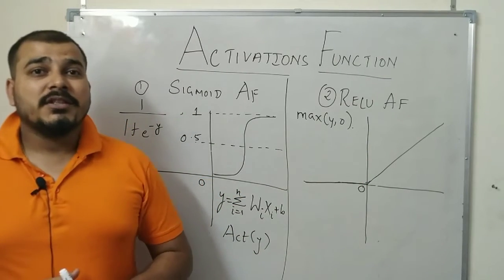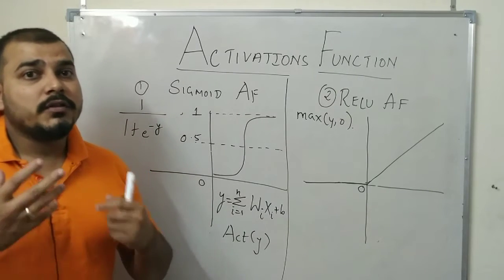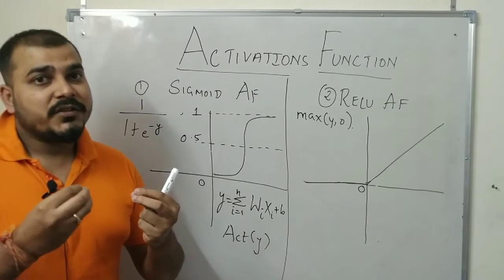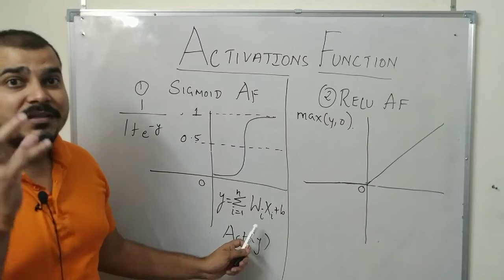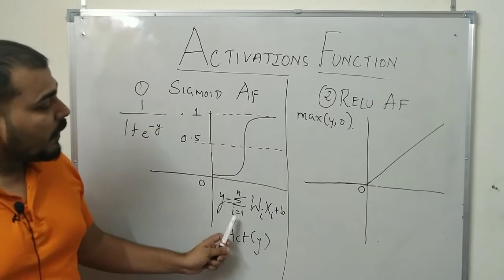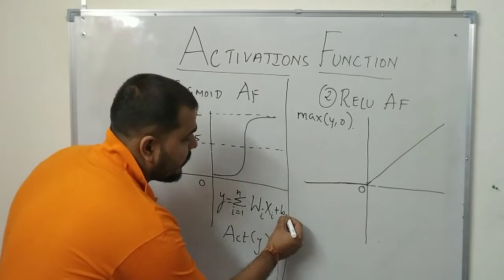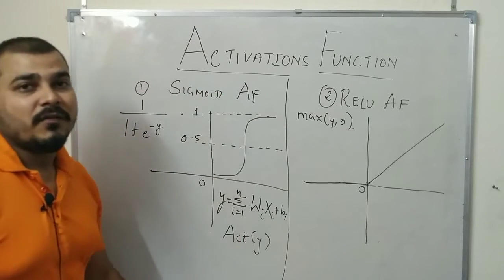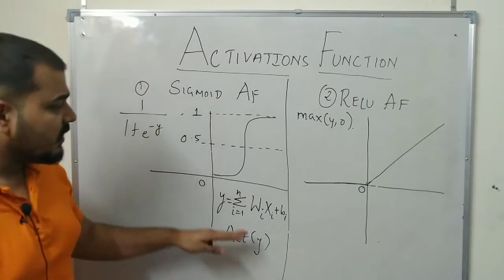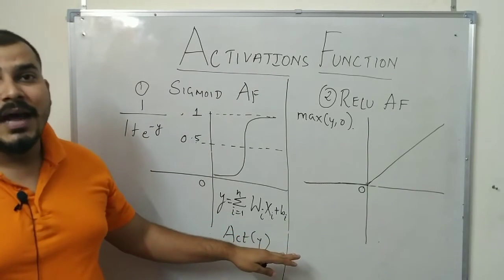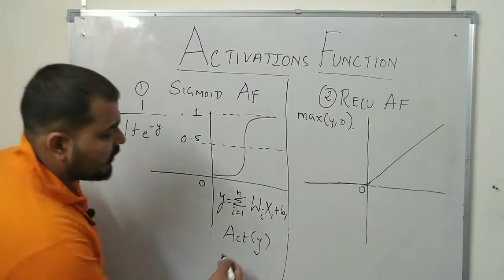We need to understand activation functions because in my previous video, when we were discussing about the neural network architecture, we saw that each and every feature will get multiplied to the weights. The formula is: summation of n to n, wi multiplied by xi plus bi. The bias will be based on the number of neurons. This was a simple operation that was happening — the multiplication of weights along with the features — and then after that, activation function was applied.